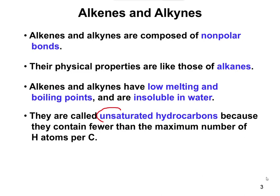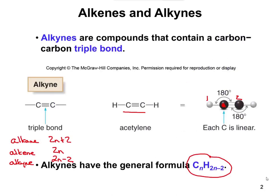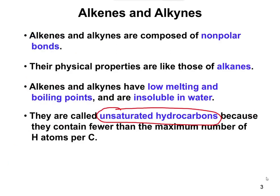Alkenes and alkynes are called unsaturated hydrocarbons. If you remember, alkanes were saturated. These ones are unsaturated, which basically means that, in theory, we can put more hydrogens on there per carbon. In order to do that, we'd have to get rid of the double bond. The maximum number of hydrogens we can fit would be with alkanes — 2n+2. Both alkenes and alkynes have fewer than the maximum, which is why we say they are unsaturated.